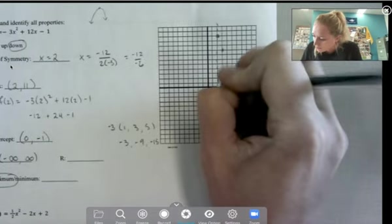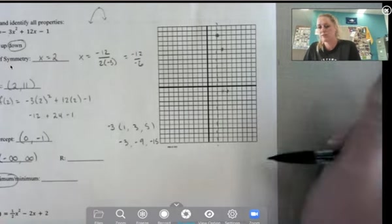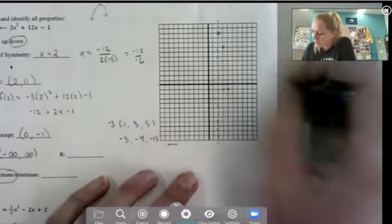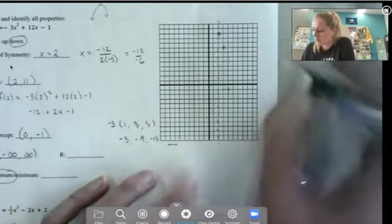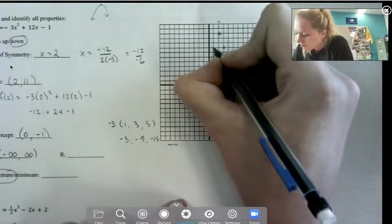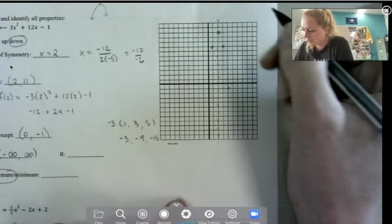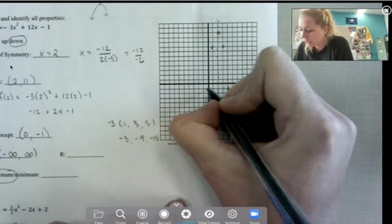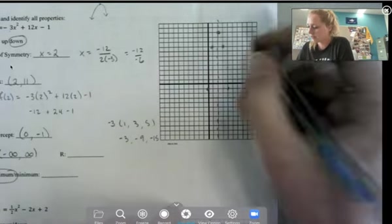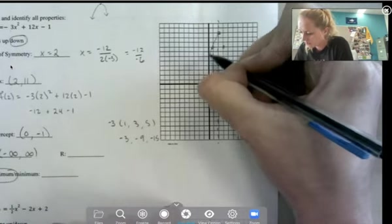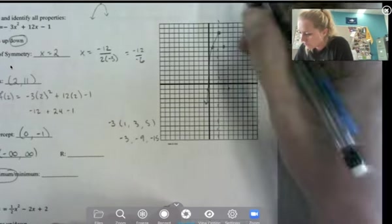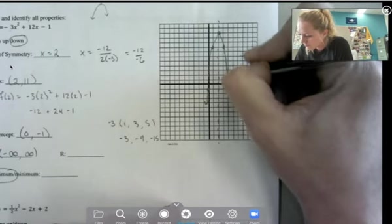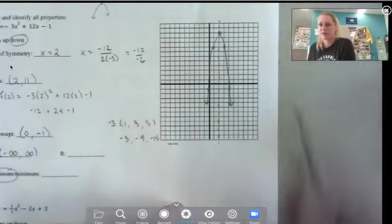So we went down 3 and over 1, then down 9 and over 1. We could go down 15 and over 1 to get one more. But remember, we want to have a minimum of 5 points. And there's our graph.